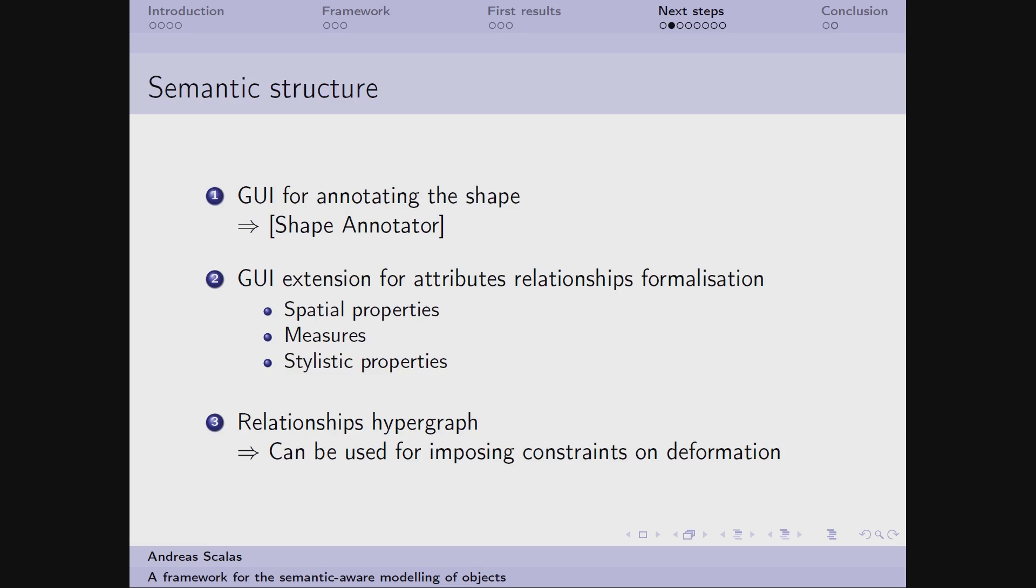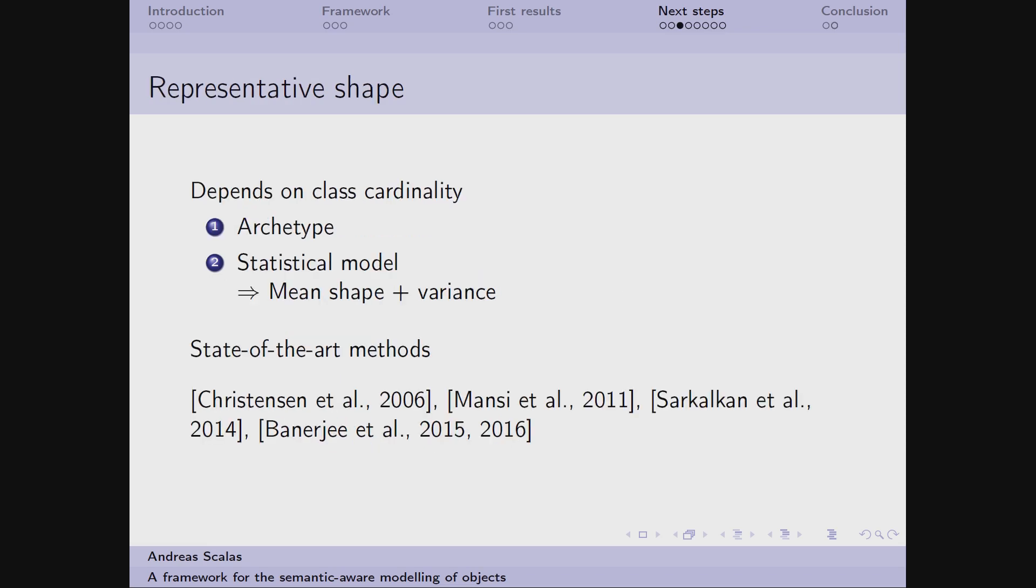Then I plan to extend this interface for allowing the user to state some relationships between attributes of the key concepts of the ontology. Notice that these attributes can define spatial properties such as the central position or other, and measures such as the volume of an interesting part, but even stylistic properties such as the color or the presence of patterns. The high-level representation of the resulting relationship structure will be a graph, or better an hypergraph, that we will use for imposing constraints on the deformation but possibly even for other ends.